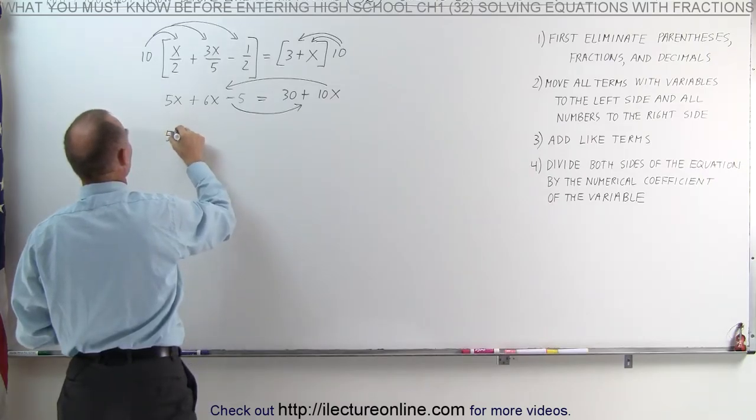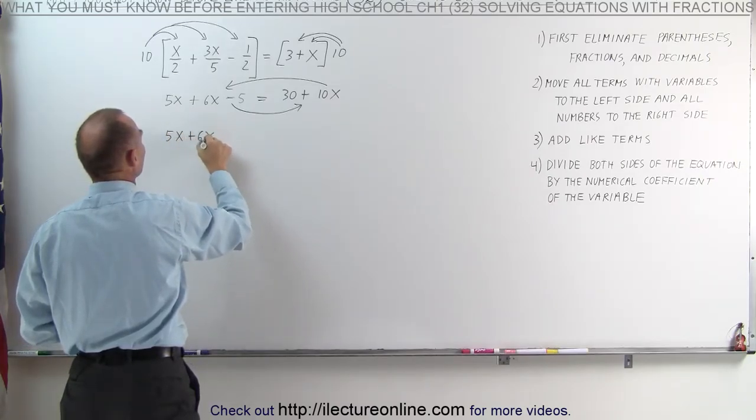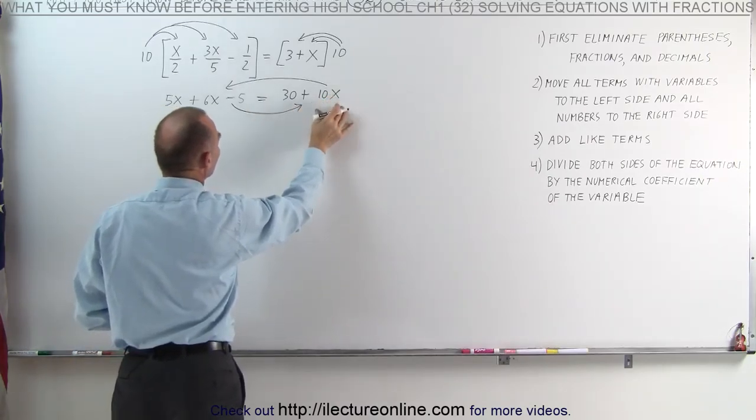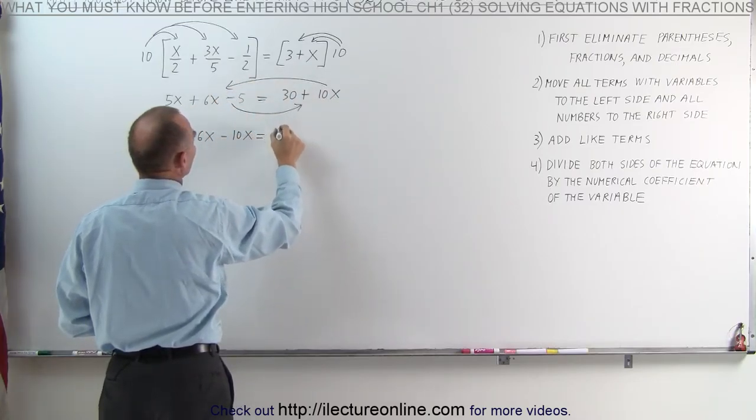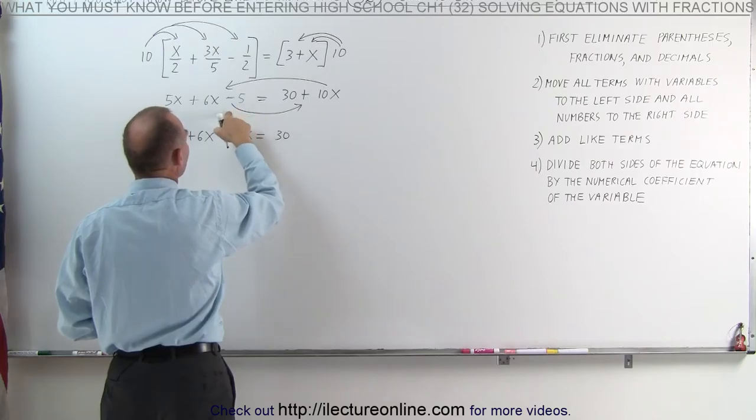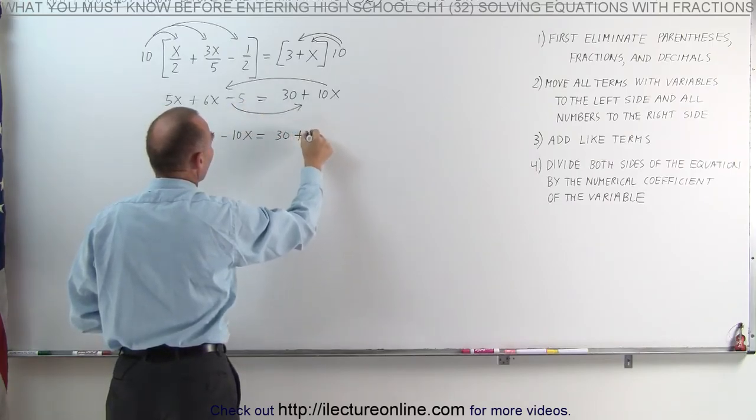On the left side, we end up with 5x plus 6x. They're already on that side. When we move the 10x to the left side, that becomes a minus 10x equals 30. When we move the negative 5 to the right side, it becomes a positive 5.